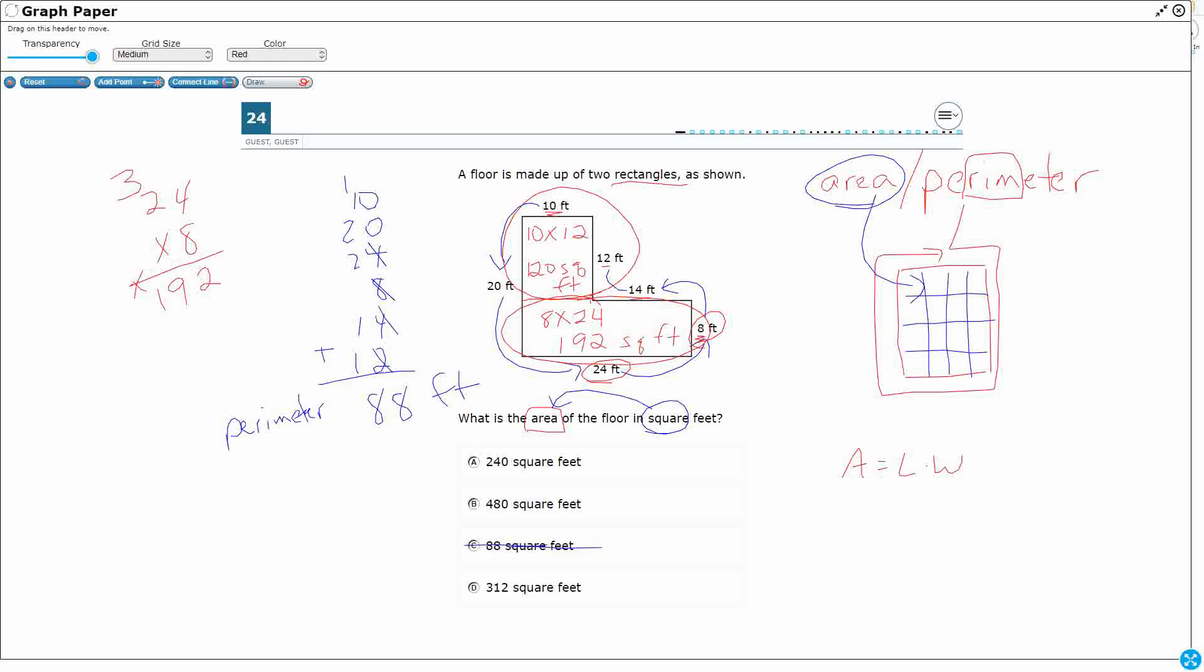Alright, so I just need to now add those two together, the 192 and the 120. And what's that going to be? 2, 11, 312 square feet. So we see that right there.